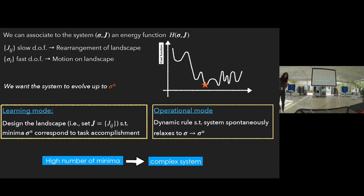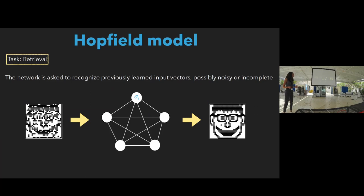The j are slow variables and we can imagine it as a rearrangement of the landscape, while the sigma are very fast and we can think the evolution of sigma as motion on the landscape. We want that the ground state of the network will be a configuration sigma star. We have to define the good weights, the good matrix j, and a dynamic rule such that the minima sigma star correspond to task accomplishment and the system continuously relaxes up to sigma star. We can have a lot of minima in this landscape, so the system is a complex system.